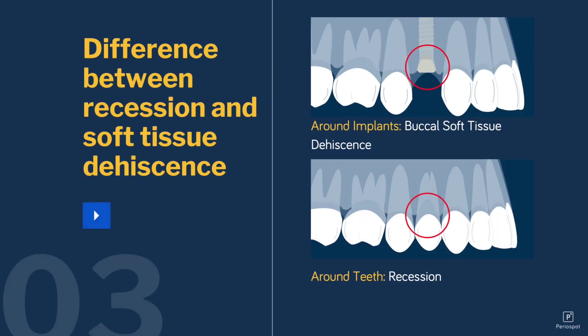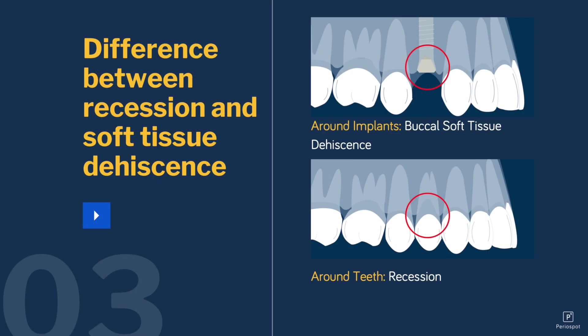There is one important thing to know. When we have a recession, it means that it is in the teeth. When we have a dehiscence, it means that it is in an implant. This is the difference we have to make between soft tissue dehiscences and a recession — in the teeth versus in an implant.